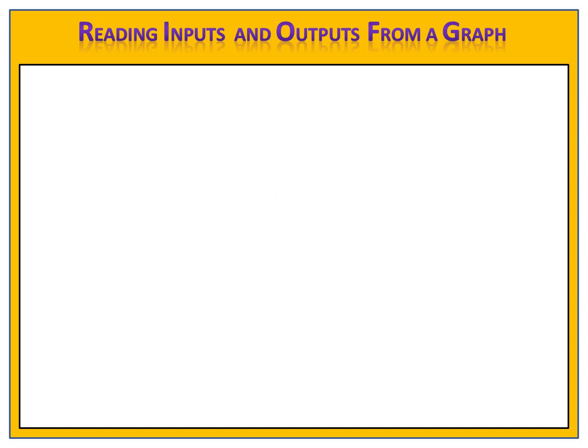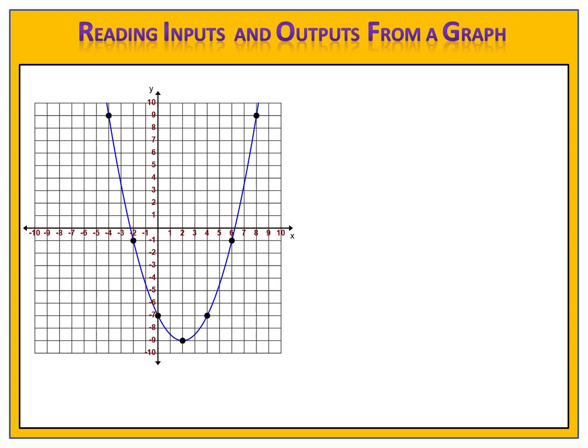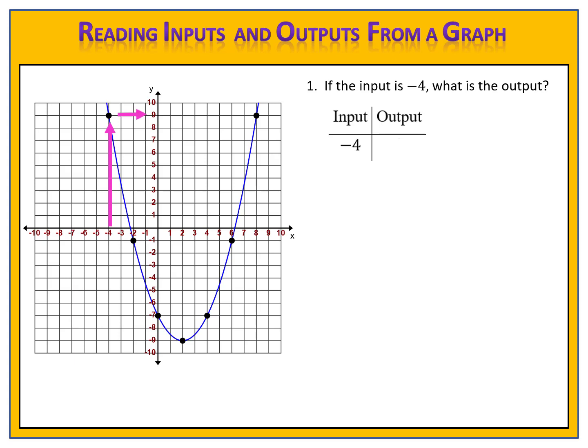Let's take a look at one more exercise for today. Here we have a graph that shows inputs and outputs. This shape is called a parabola. This time we're going to look at some questions in words rather than a table. Question number 1: if the input is negative 4, what is the output? We go over on the input, or x-axis, and we go up to the point. The point is at the 9 level, and therefore the output is positive 9.